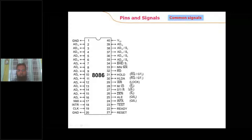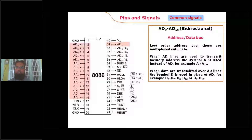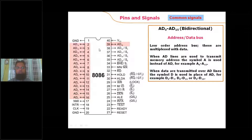Pins 24 to 31 — from HOLD to INTA — are called minimum mode signals, and the corresponding pins in maximum mode are called maximum mode signals. The 8086 has a 20-bit address bus and a 16-bit data bus. To reduce complexity and decrease the size of the processor, data and address signals are time-multiplexed with each other. Pins 2 to 16 and 35 to 39 are the pins over which the processor generates address signals.